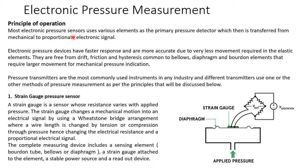Moving on to electronic pressure measurement: most electronic pressure sensors use various elements as the primary pressure detector, which then convert mechanical input to a proportional electronic signal. Electronic pressure devices have faster response and are more accurate due to less mechanical movement required, reducing drift, friction, and hysteresis common to bellows, diaphragms, and Bourdon tube elements. Pressure transmitters are the most commonly used instruments in industry.